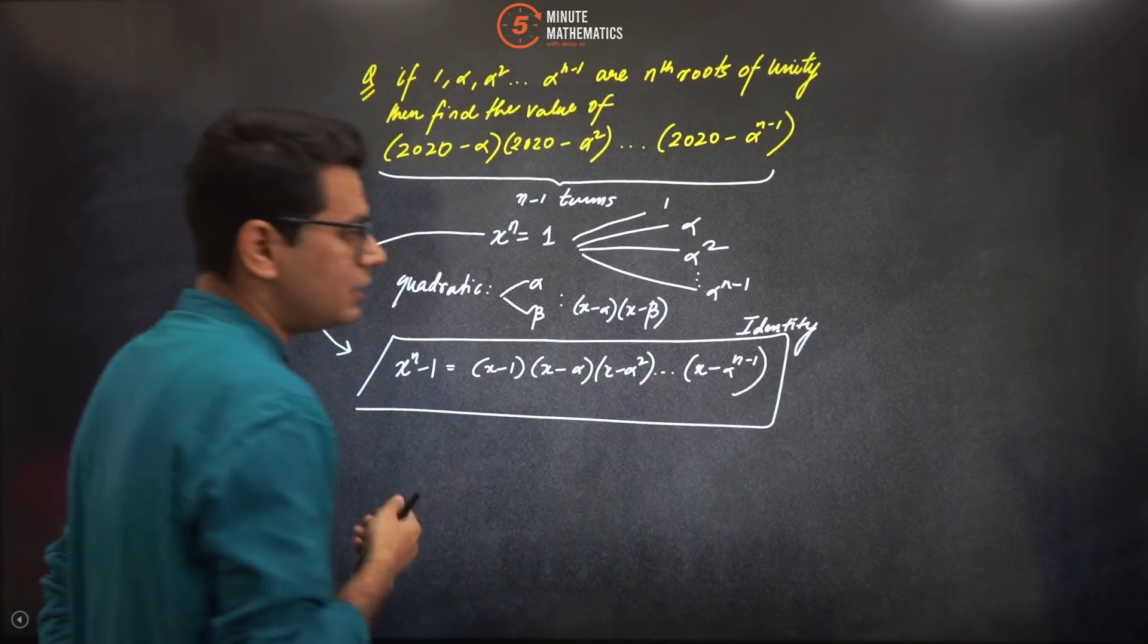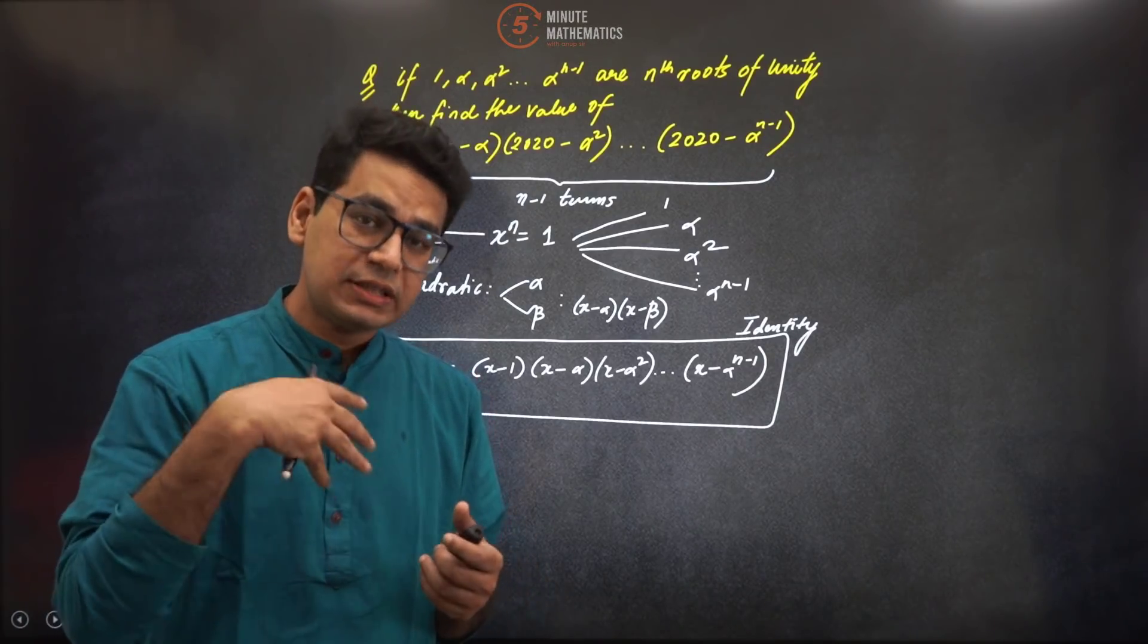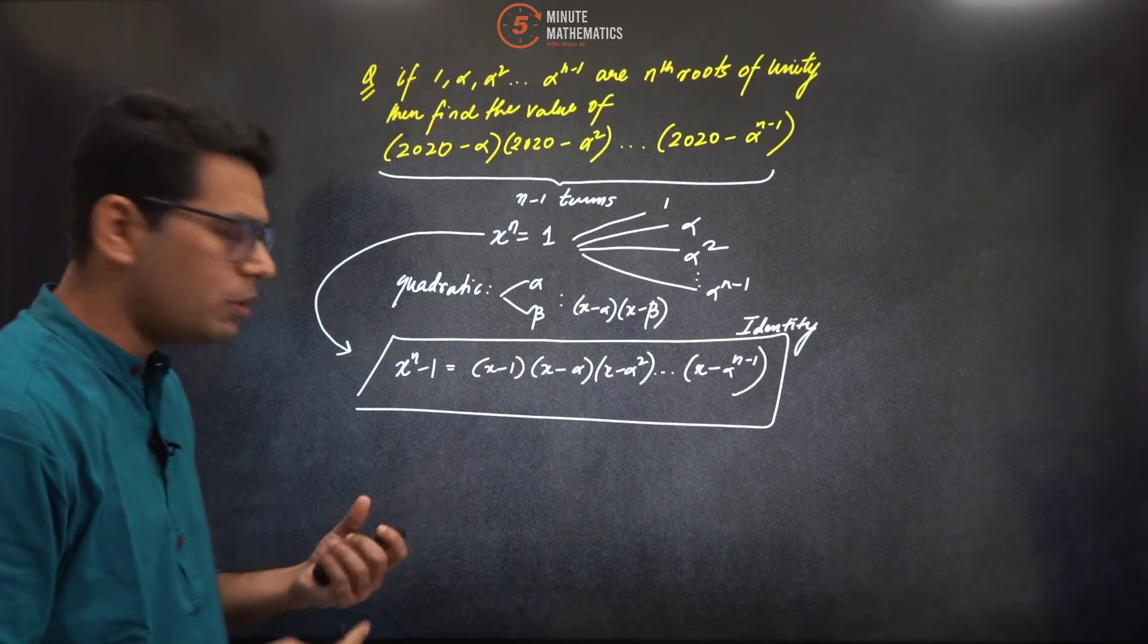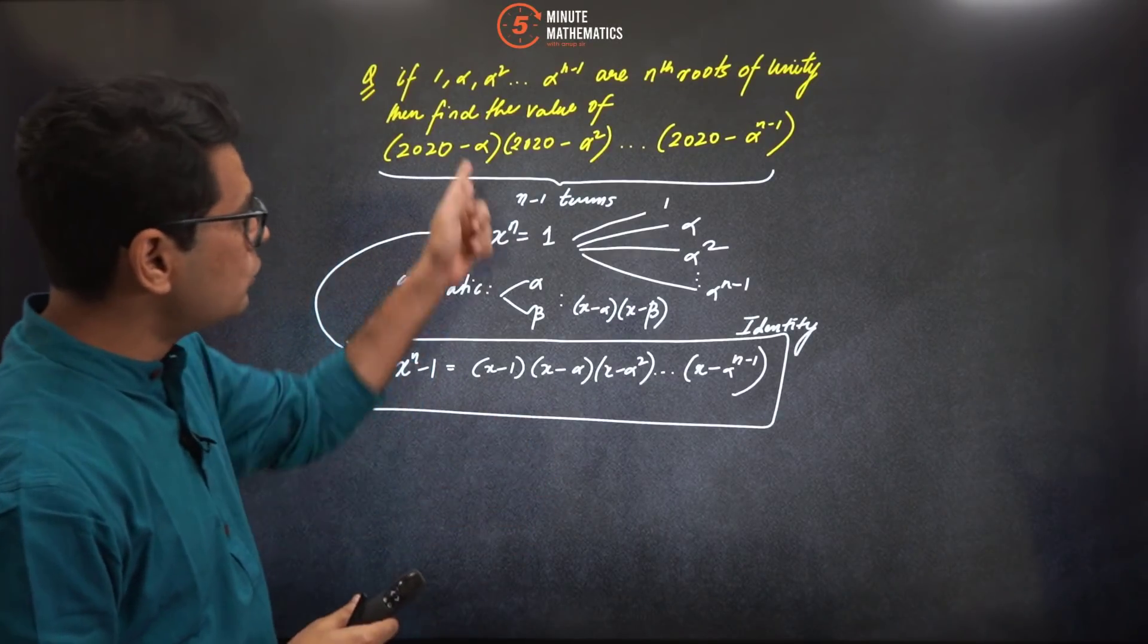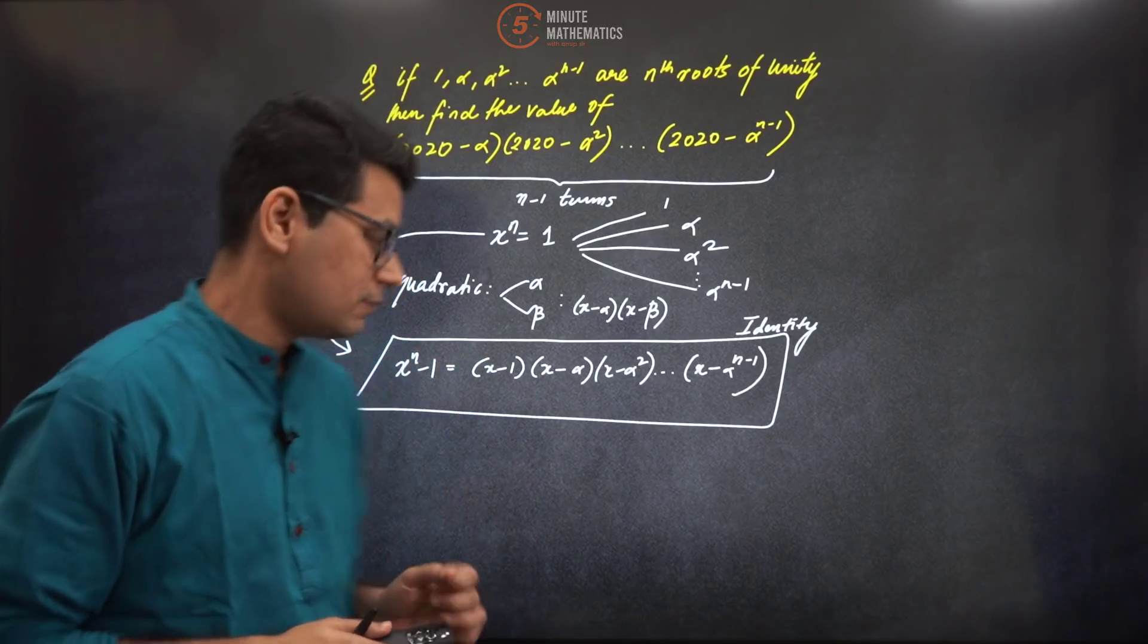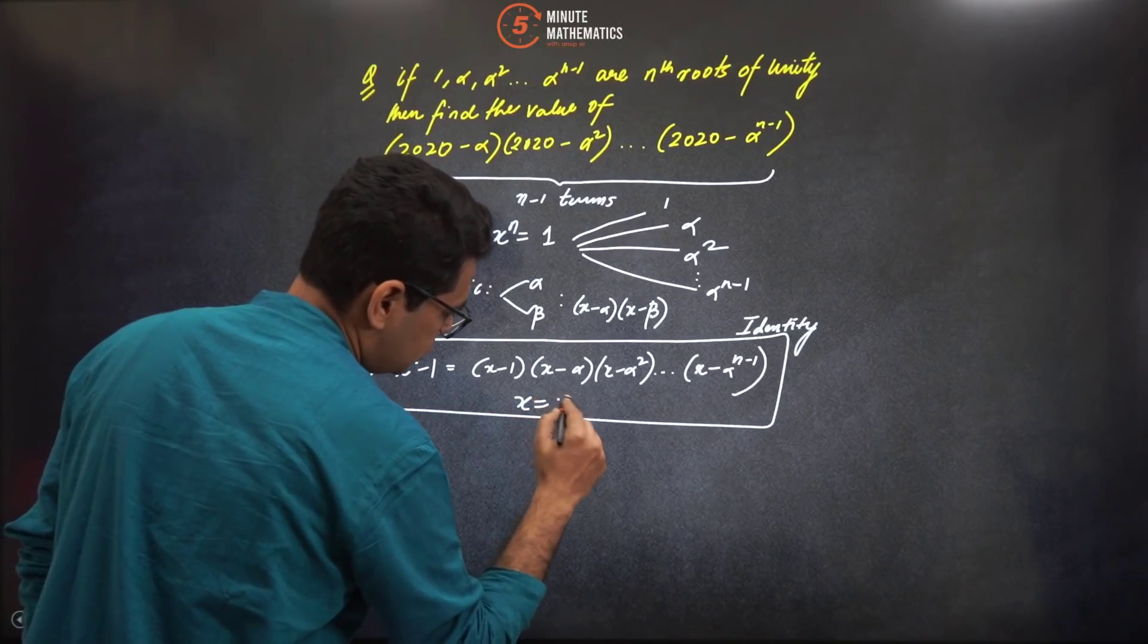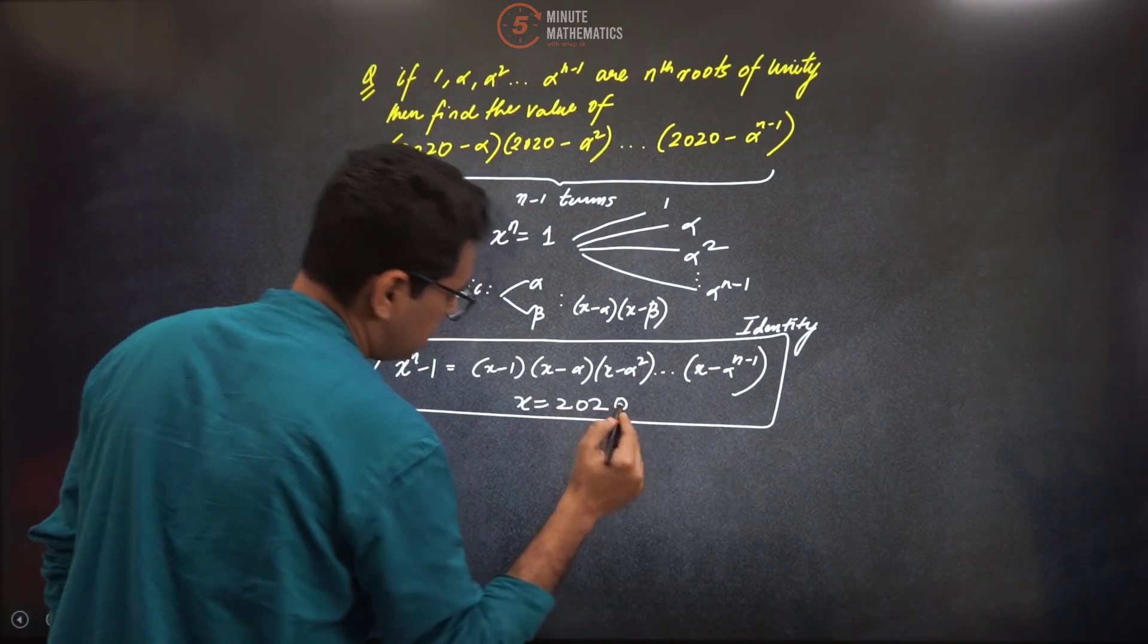Now if you know this, the important thing is to know that this is not just an equation which is written - this becomes an identity. And what do you mean by identity? Identities are always true for any value of x. So if it is true for any value of x, that means you can put any value of x. Now go back to the question - what value should you put? X should be this particular year, that is 2020.